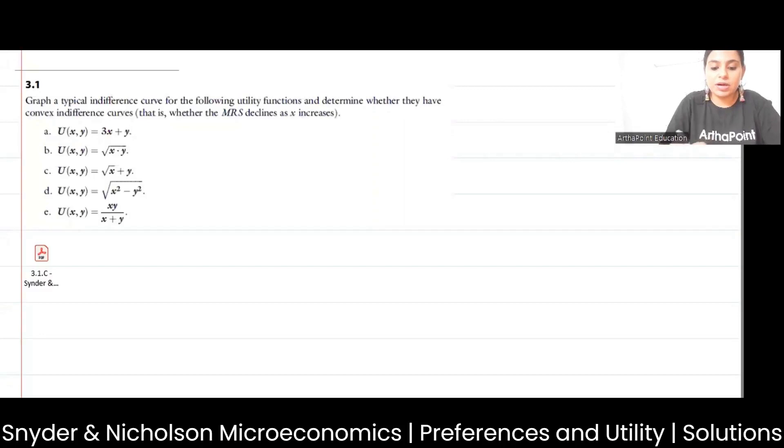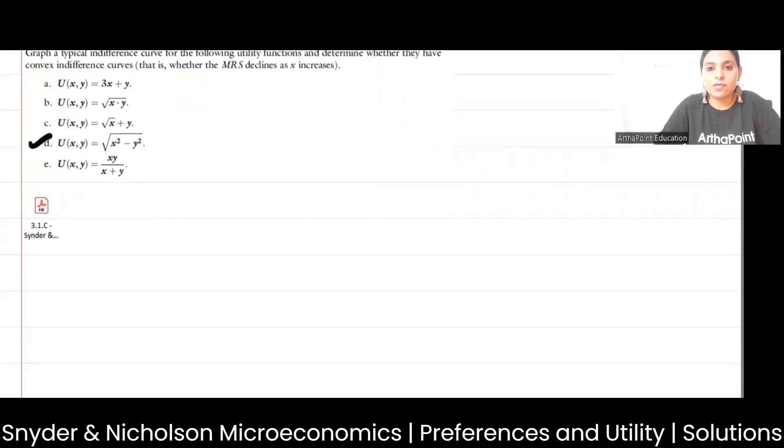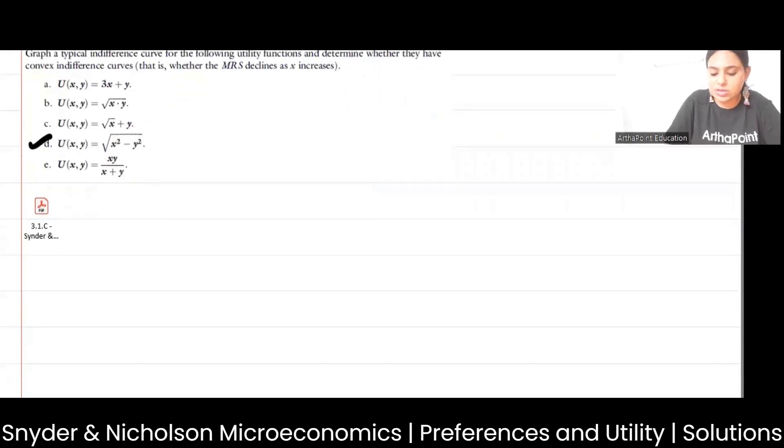Now take the fourth part of this question. The utility function is given as a root of x squared minus y squared.